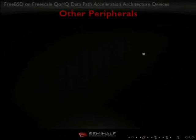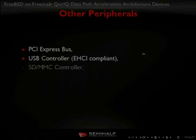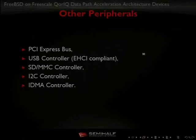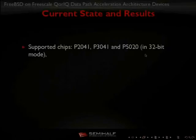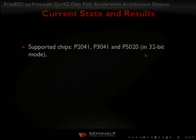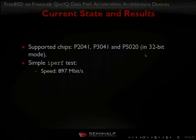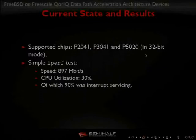As for other peripherals, we are now also supporting PCIe bus, USB controller, and memory card controller, and more. Regarding current state, we are supporting three chips: the P2041, P3041, and P5020 — the last one only in 32-bit mode because the cores inside are 64-bit and we are now working on 64-bit support. Simple iPerf tests showed quite good bandwidth to the system. CPU utilization was high at about 30%, but as we don't have polling yet, almost 90% of that was interrupt servicing.